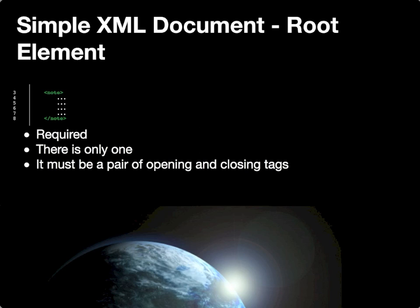We can get a little more specific and talk about a specific element: the root element. The root element is special in that it is required — every XML document must have one and only one. It must be a pair of opening and closing tags. In the case of our example, our root element is the note element with the opening tag on line three and the closing tag on line eight.